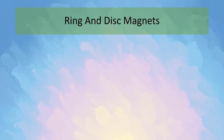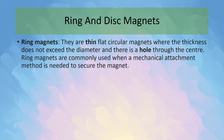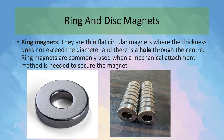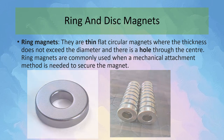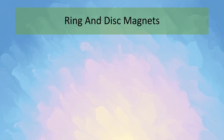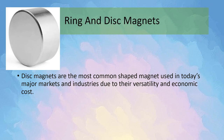Now let's look at ring and disc magnets. Ring magnets are thin flat circular magnets where the thickness does not exceed the diameter and there is a hole through the center. Ring magnets are commonly used when a mechanical attachment method is needed to secure the magnet. Here you can see some pictures of ring magnets. Disc magnets are the most common shaped magnet used in today's major markets and industries due to their versatility and economic cost.